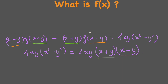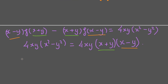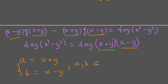Based on that, we can use those similar terms to introduce two substitution variables: let a equal x plus y, and p equal x minus y. Of course, a and p are also members of the real numbers.